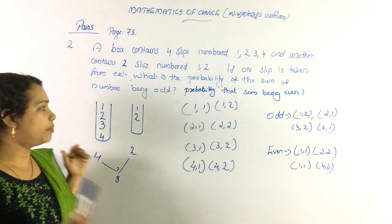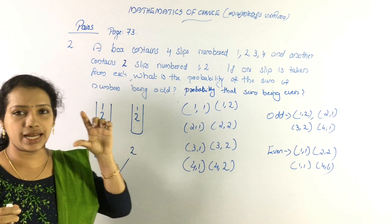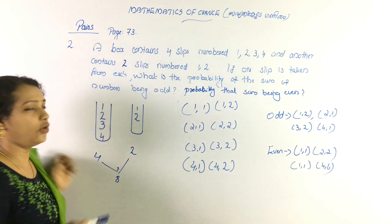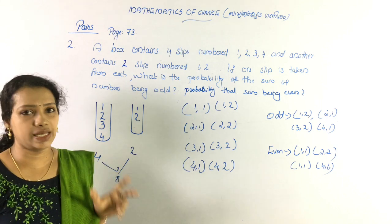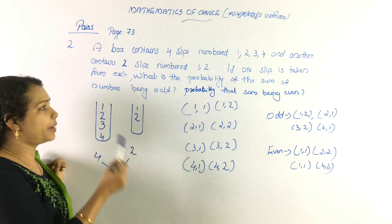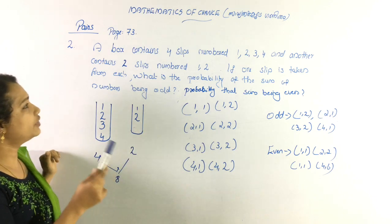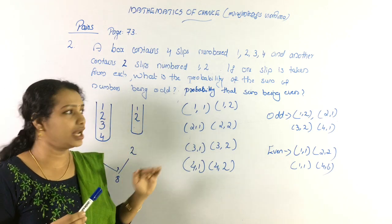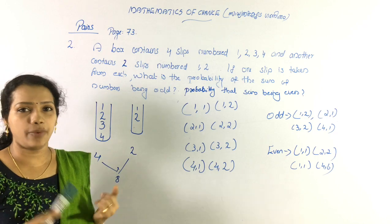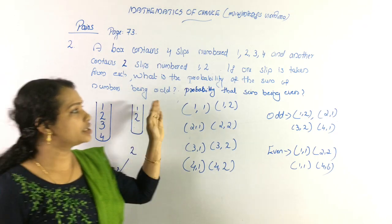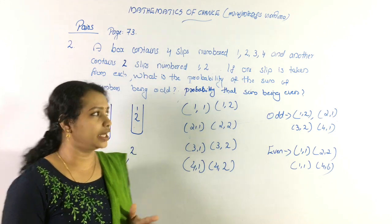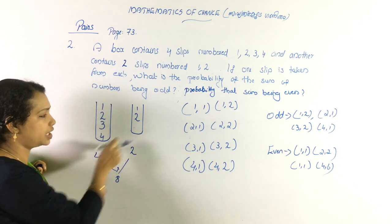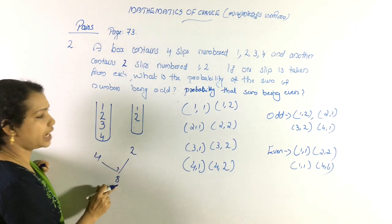Also, find the probability that the sum is even. We have two boxes: the first with slips 1, 2, 3, 4 and the second with slips 1, 2. The total number of pairs is 4 into 2, that is 8 possibilities.